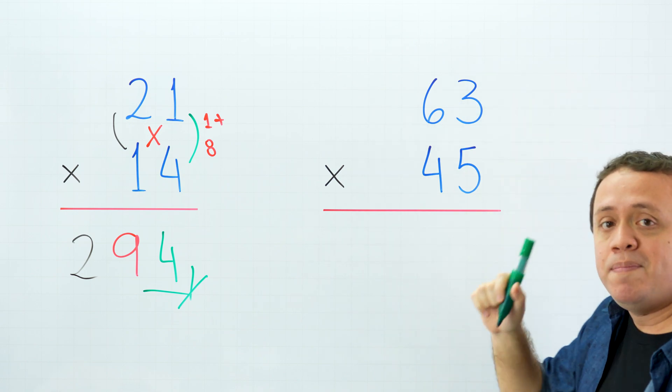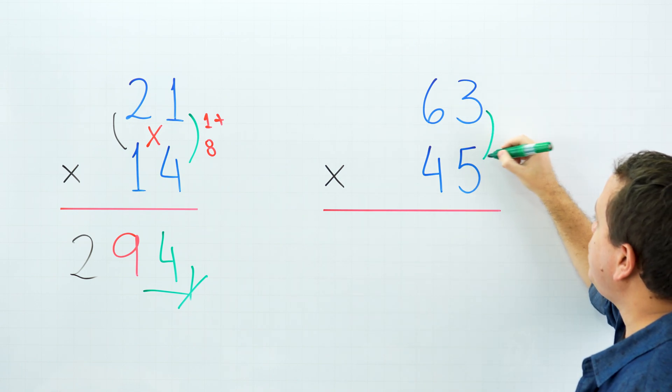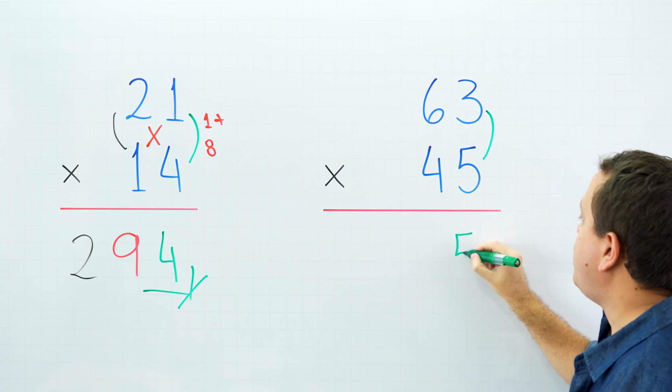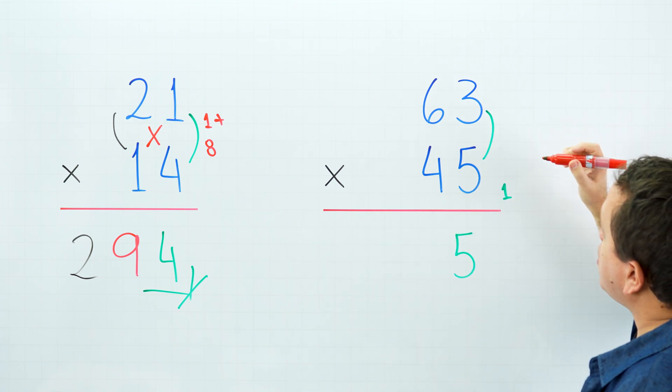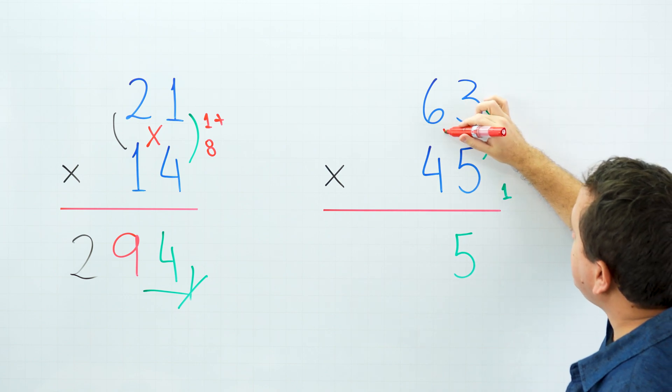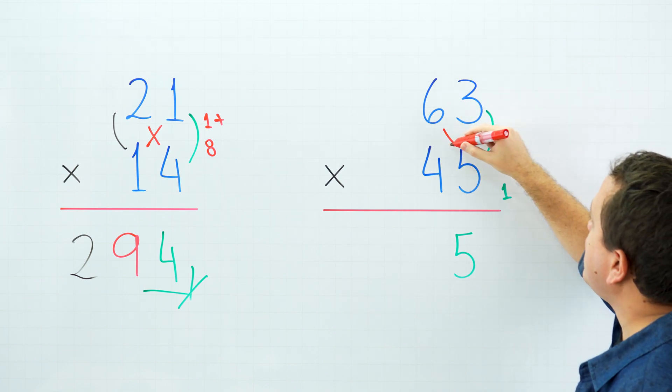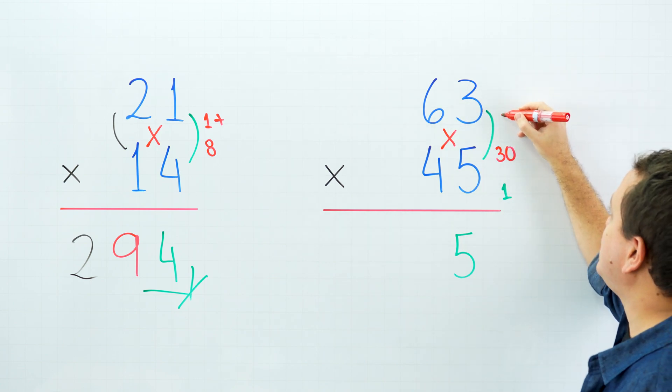First, we are going to multiply the digits on the right side, and 3 times 5 is 15. Write 5 and carry 1. Next, we are going to cross-multiply. 6 times 5 is 7. On the other side, 4 times 3 is 12.